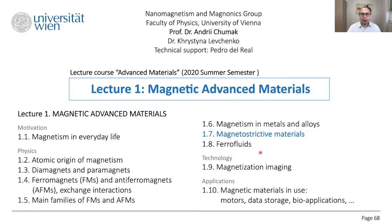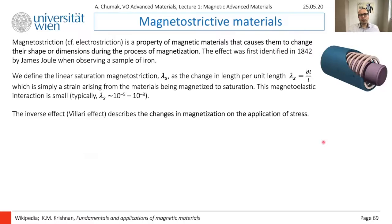Hello everyone. The next lecture is devoted to magnetostrictive materials. Magnetostriction is a property of magnetic materials that causes them to change their shape or dimensions during the process of magnetization.